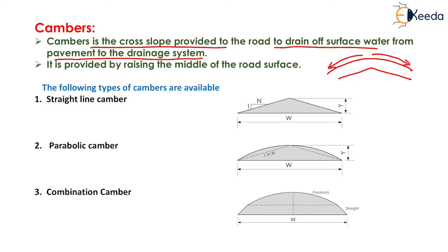Camber is generally provided to drain off the surface water from the pavement, and it is provided by raising the middle of the road surface. When we raise the middle of the road surface, this profile is known as camber, which is the cross slope.